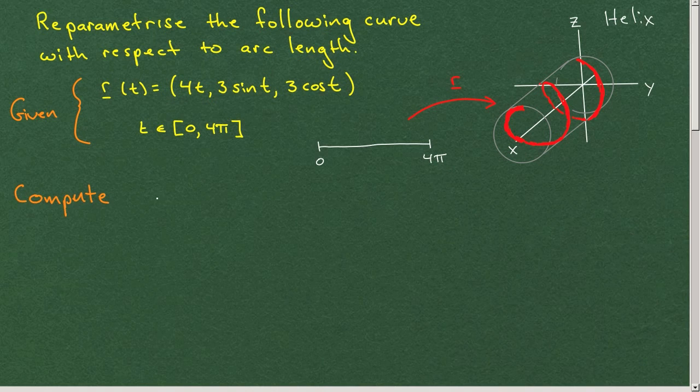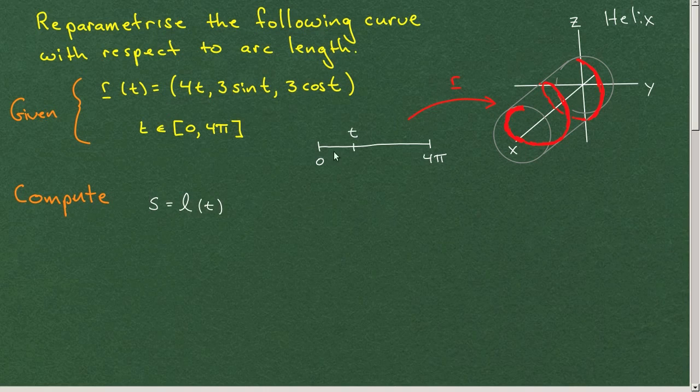So you need to compute the length s, the arc length s corresponding to any t in this interval 0 to 4π. That is to say, the integral from a, which is 0, up to arbitrary point t of the modulus of r prime τ dτ. So we need to work out the modulus of the derivative. I'll do that very quickly since you should be able to do this easily at this point.